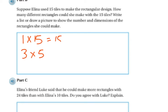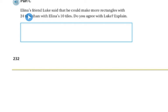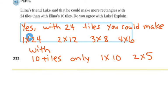Suppose Elena used 15 tiles to make a rectangular design. How many different rectangles could she make with 15 tiles? We know that 1 times 15 is 15, and 3 times 5 is 15. So she could make two rectangles without having any leftover. Elena's friend Luke said he could make more rectangles with 24 tiles than with Elena's 10 tiles. Do you agree with Luke? Yes, because with 24 tiles you could make 1 times 24, 2 times 12, 3 times 8, and 4 times 6. But with 10 tiles, you can only make 1 times 10 or 2 times 5. Good luck with your test.